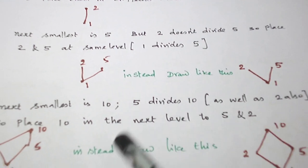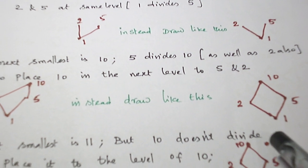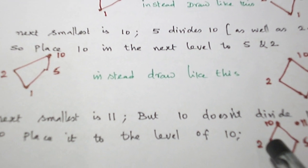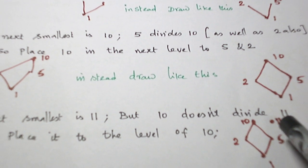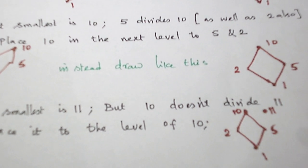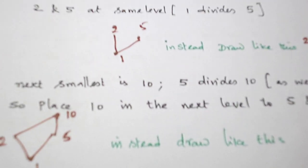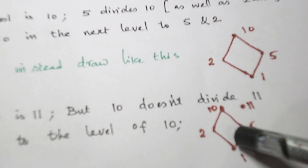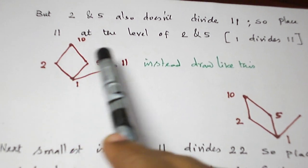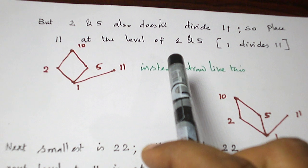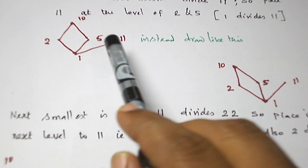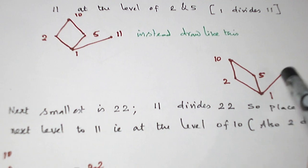And the next smallest element is 11. 10 does not divide 11, so I place the element 11 in the same level of 10. But 2 does not divide 11 as well as 5 does not divide 11, so 11 cannot be placed in a higher level than 2 and 5. So it has to be brought to the same level of 2 and 5. So I place 11 in the same level of 2 and 5. 1 divides 11, so I draw a line between this. So instead of placing in this way, I can place 1 divides 2, 1 divides 5 and 1 divides 11.